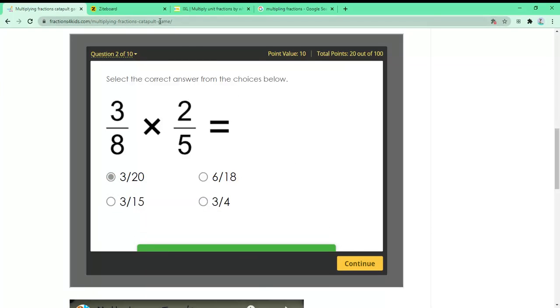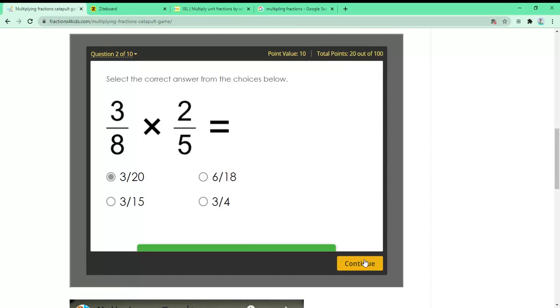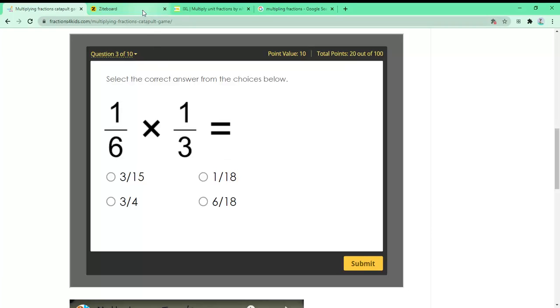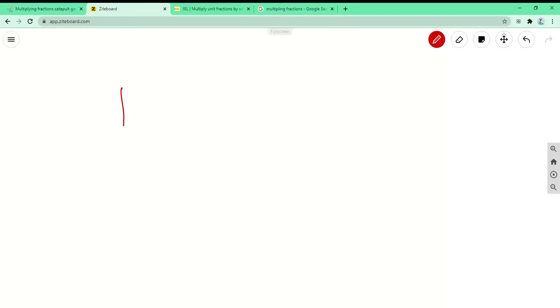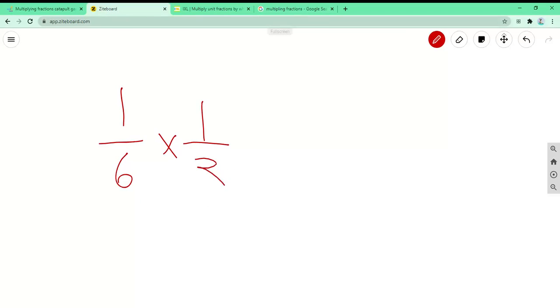Let's do another question. So 1 sixth times 1 third. Let's try calculating that. And try doing this with me. 1 sixth times 1 third. See this if you can do this on your own.